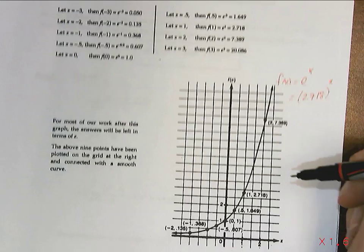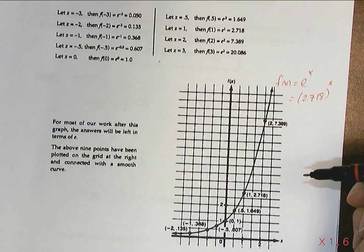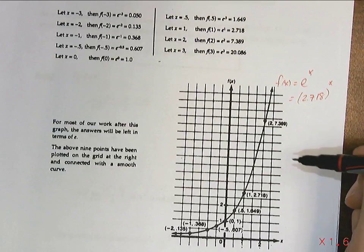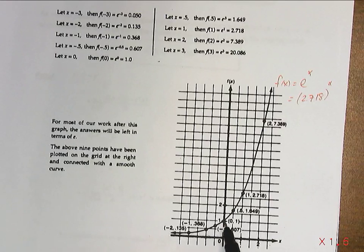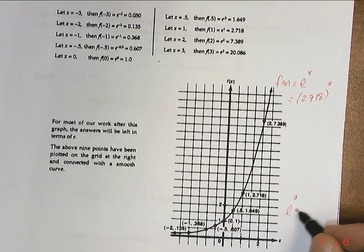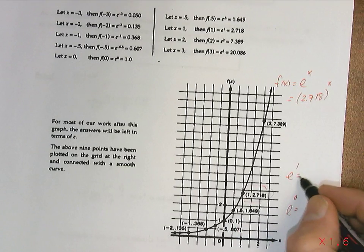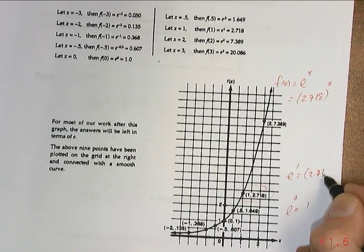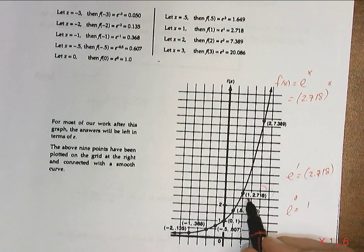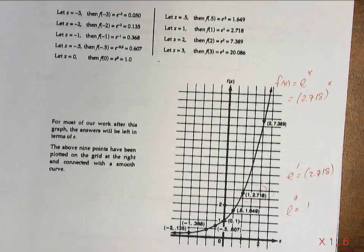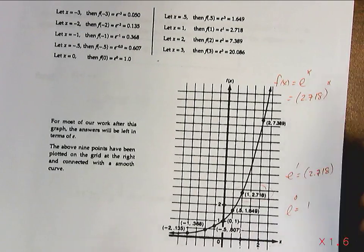That curve looks like this. And it's going to have a point here. So when e to the 0 equals 1. And notice this point here, e to the 1 is going to be 2.718. So that's why we have an x value of 1 and a y value of 2.718 and an increasing function.